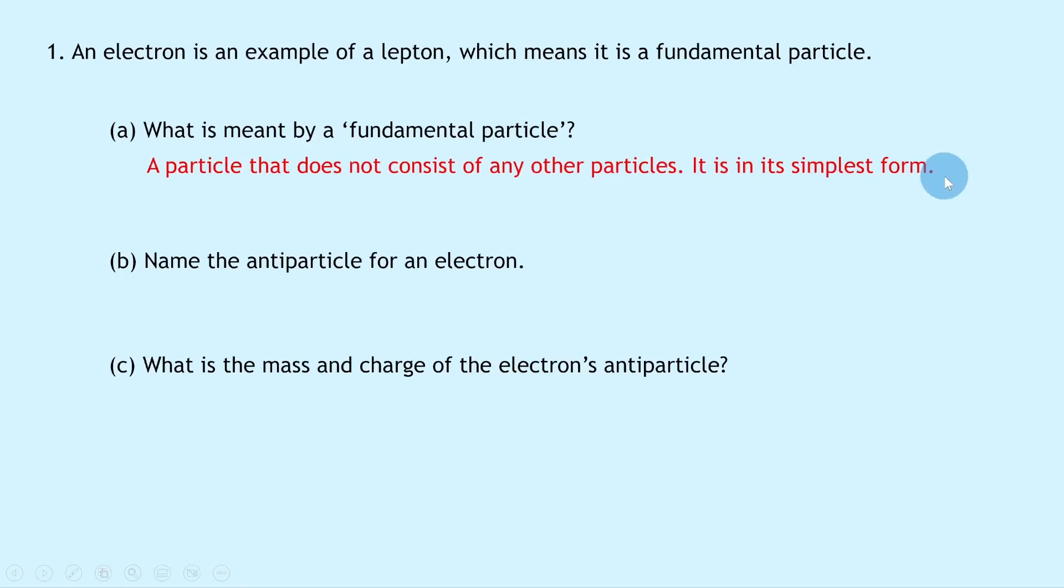Part b then says name the antiparticle for an electron. Well, remember the antiparticle for an electron was the positron, which is the symbol e with a little plus superscript, and that's to show it's got a positive charge.